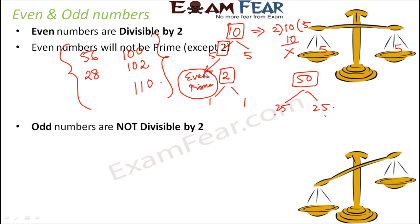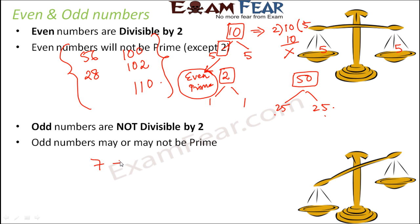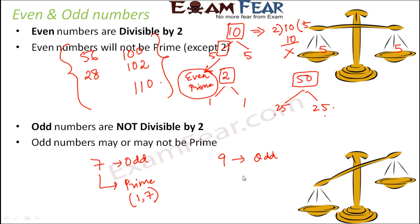But that does not mean that all odd numbers will be prime numbers — that is also not true. Odd numbers may or may not be prime numbers. For example, 7 is not divisible by 2, so 7 is an odd number, and it is a prime number because it has only two factors: 1 and 7. But 9 is also an odd number, and 9 is a composite number because it has multiple factors: 1, 3, and 9 — more than two factors. So odd numbers can be prime or composite, but even numbers are always composite except for the number 2.